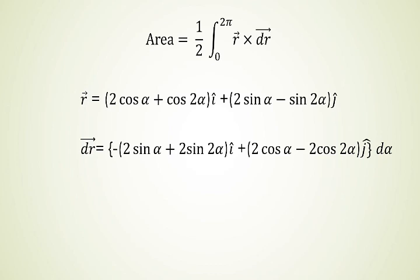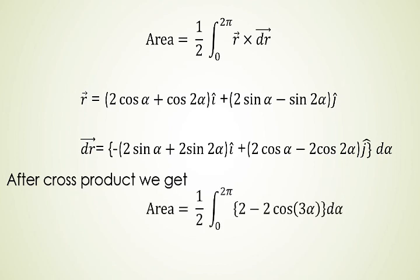dr⃗ = {-2sin(α) + 2sin(2α)}î + {2cos(α) - 2cos(2α)}ĵ dα. With the help of differentiation, we have found our dr⃗. Now after the cross product of r⃗ and dr⃗, we get Area = (1/2)∫₀²π (2 - 2cos(3α))dα. On integration, we get our area equal to 2π square units—that's our solution.